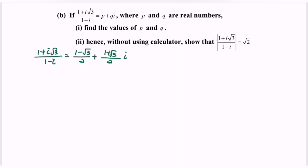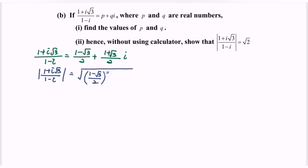Now kindly focus on the second part. Hence, without using a calculator, we need to show that the modulus of (1 + √3i)/(1 - i) equals √2. Keeping in mind the values of p and q, the modulus equals the square root of [(1 - √3)/2]² + [(1 + √3)/2]².